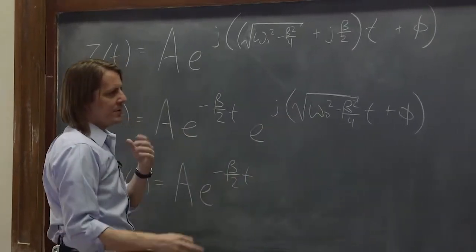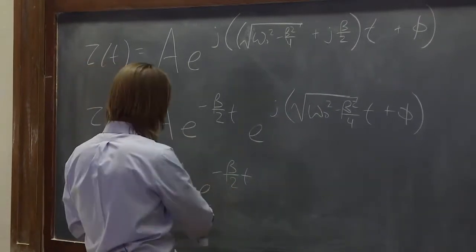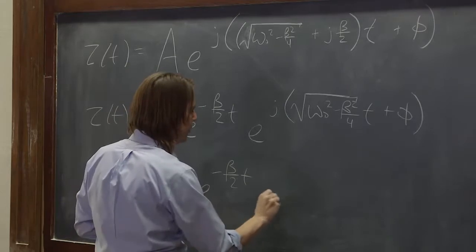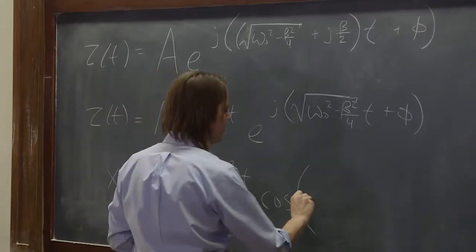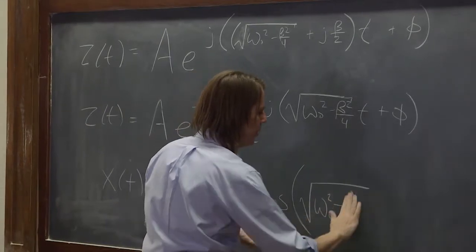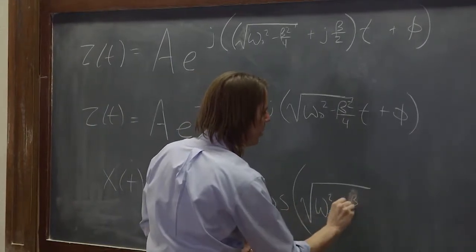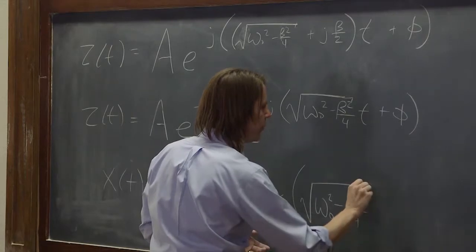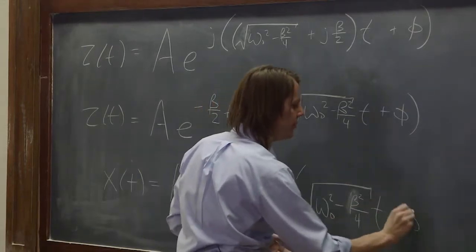The real part of this is the cosine part. So AE to the minus beta over 2T cosine, and then the square root of omega naught squared minus beta squared over 4T plus phi.